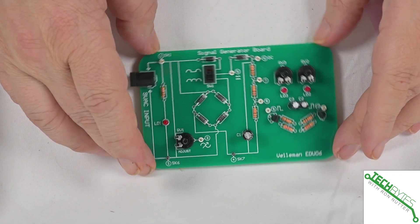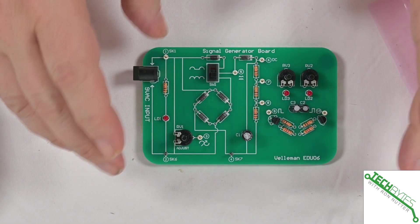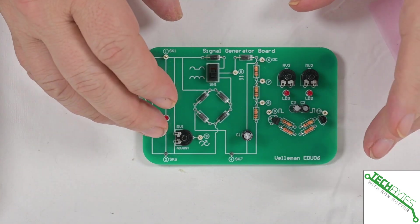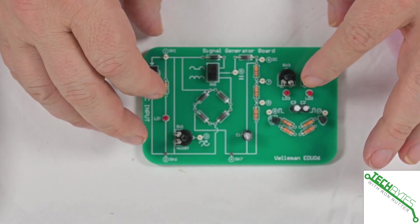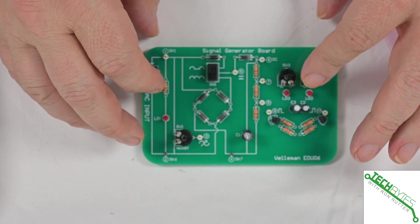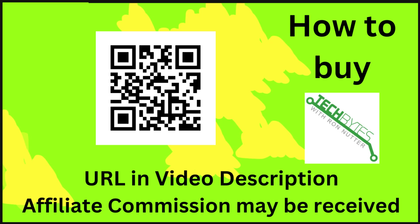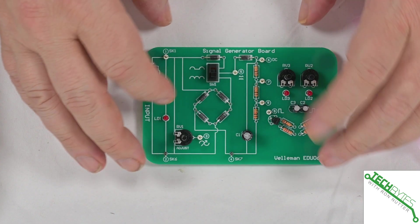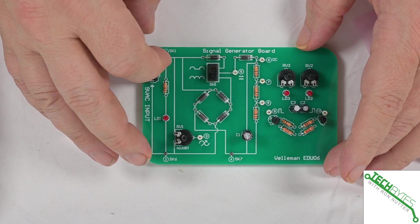This gives you different things to adjust. Some potentiometers, you've got transistors that can be checked on and it shows you at different points of the board what the waveform should look like.